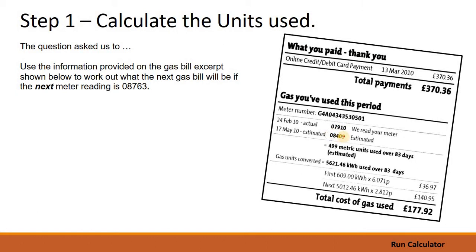We know it's the larger of these two numbers because your gas meter is always going to count upward. So in February it read 7,910, in May it read 8,409, and our number is 8,763. So we have to assume that it's after this number here.